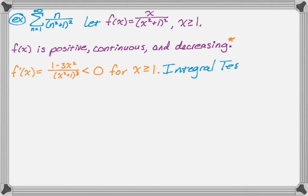I'm going to do this kind of off video and just write down the answer. So I use the quotient rule, and then I cleaned it up as much as possible. So I get f'(x) = (1 - 3x²)/(x² + 1)³. So this, since x is greater than or equal to 1, is definitely less than 0 for x greater than or equal to 1. So that means that the integral test applies.